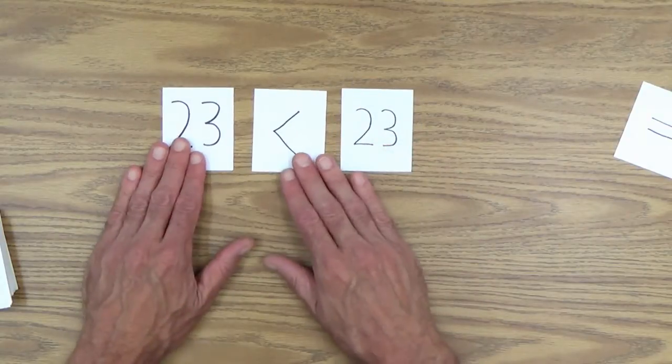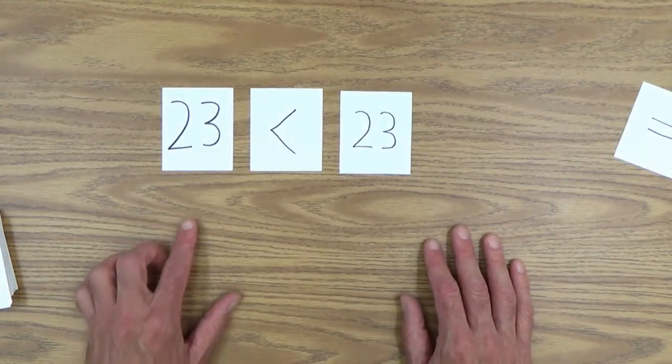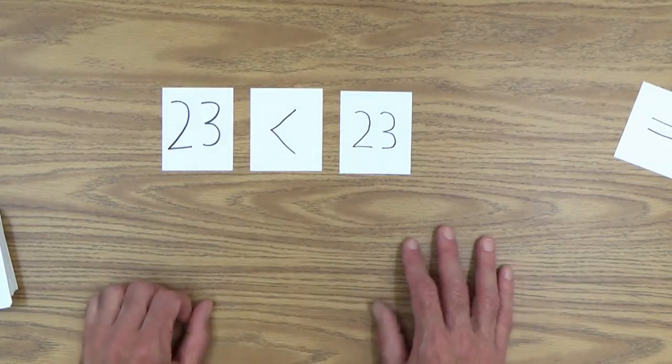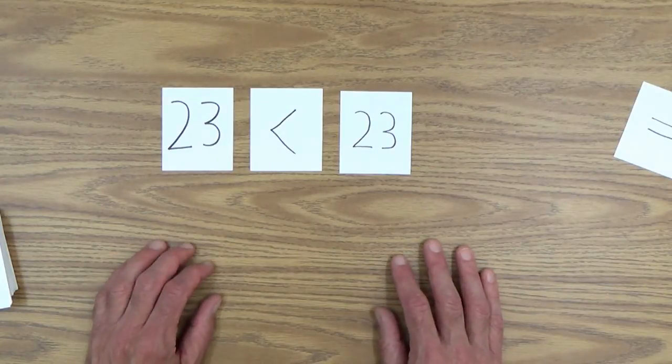You actually are tricking her a little bit here. You could say, Susan is 23 less than 23. And she'll look and look. She'll go, well, no, that's the same.